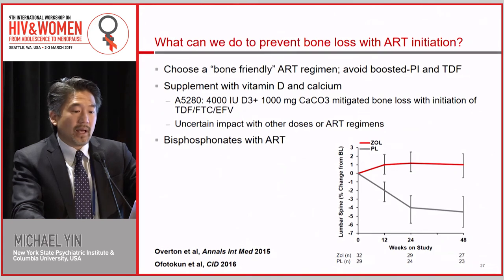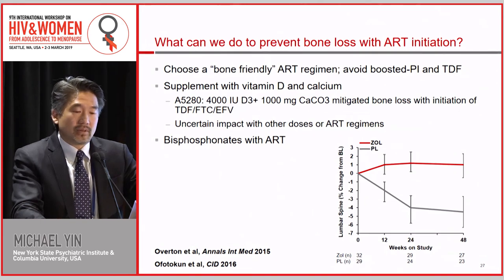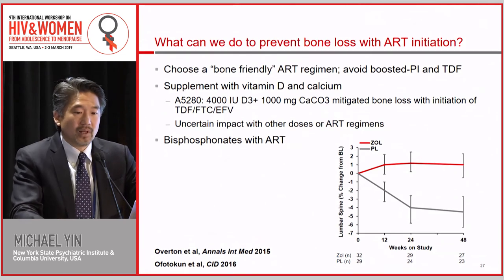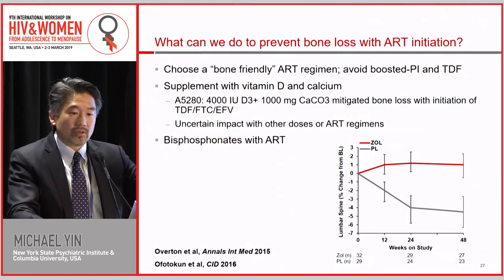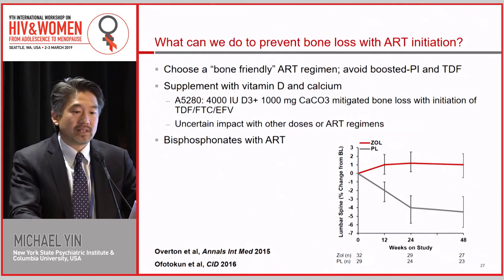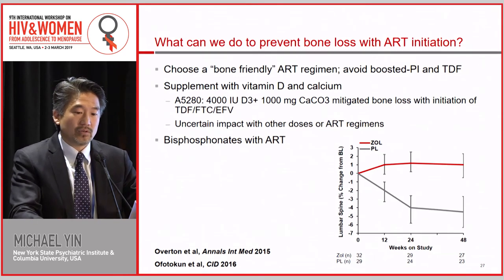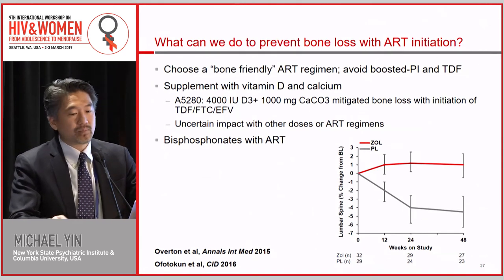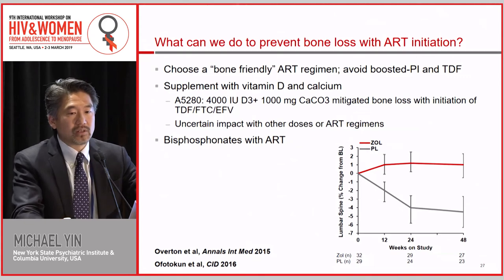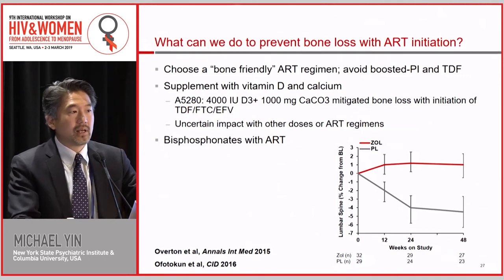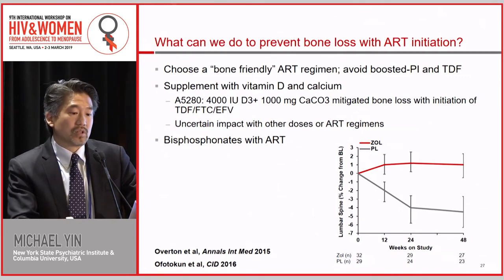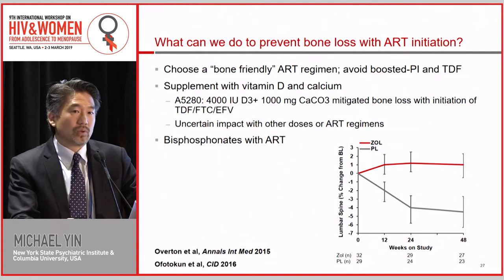There is a study by Ego Furkan that looked at whether initiating bisphosphonates with antiretroviral therapy will prevent bone loss, and indeed it did. Zoledronic acid actually increased bone density by about 1% as opposed to loss. But this is probably impractical for most situations and may not be necessary now that we know which regimens to avoid and which ones have very favorable bone profiles.